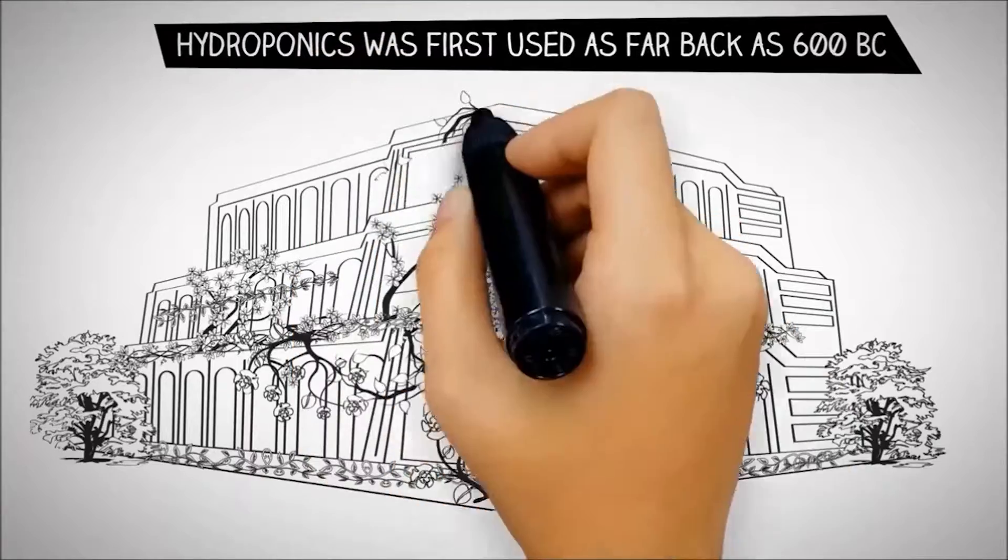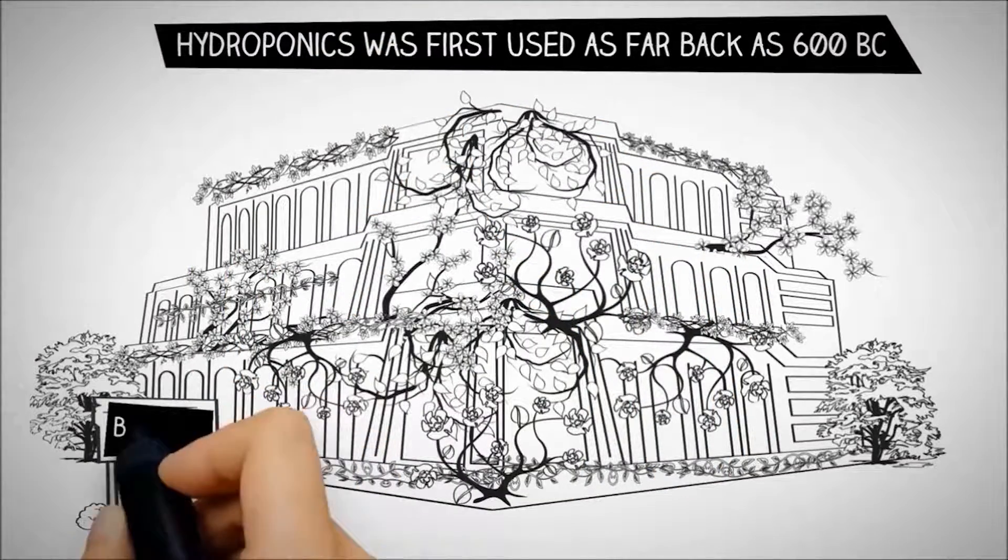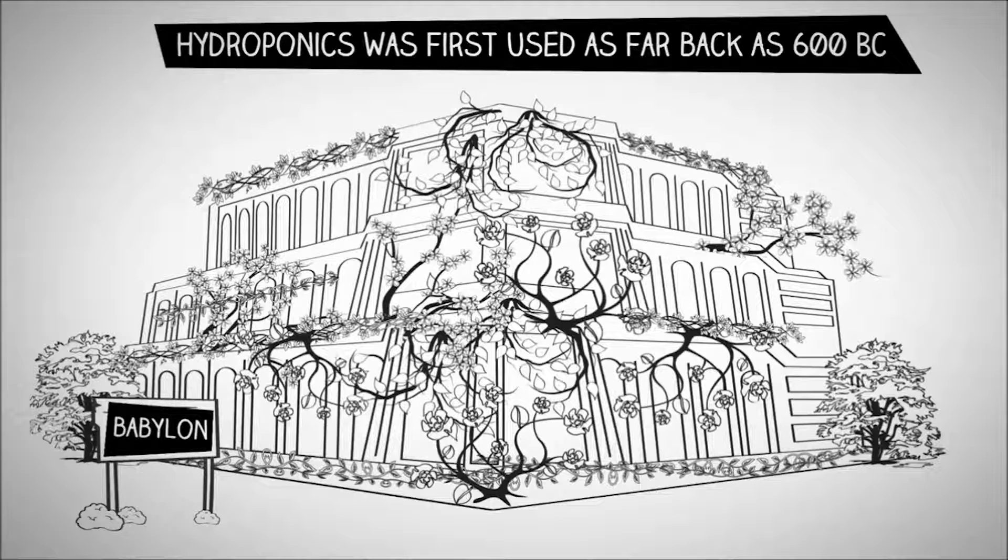Hydroponics was first used as far back as 600 B.C. in the Hanging Gardens of Babylon, one of the seventh wonders of the world.